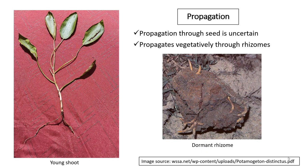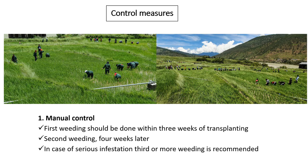Propagation through seed is uncertain. However, it propagates vegetatively through rhizomes. The resting rhizome tips or turions produce emerged shoots within 7 to 10 days of flooding and are established almost before the crop has recovered from transplanting. Therefore, they are one of the major invasive weeds in rice fields.